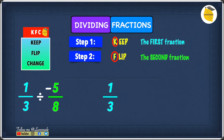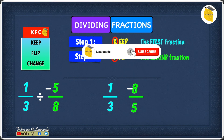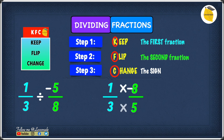In this case we have minus 5 over 8, which is a negative fraction. When flipping a negative fraction, we only flip the numbers — so we flip 5 and 8 to give us 8 over 5 — and then leave the minus sign where it is. The minus was in the numerator, so we leave it at the numerator. It's only the numbers that flip.